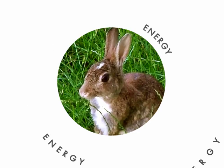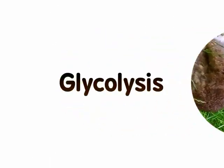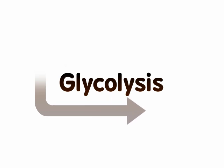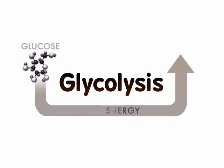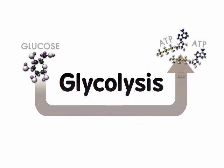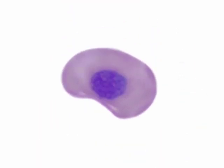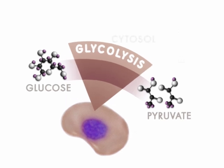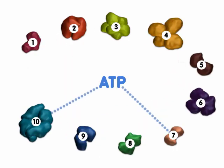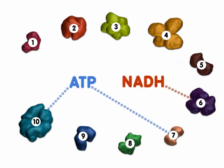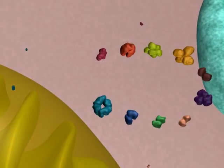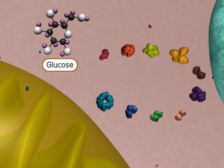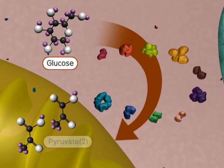Biological organisms require energy to survive. Glycolysis is one of the pathways cells use to transform sugars, like glucose, into biochemical energy in the form of ATP. In the cytosol of the cell, glycolysis converts glucose into pyruvate through a series of 10 enzymatic reactions. This process produces ATP, along with other products such as NADH, that can be used later to produce even more ATP for the cell. Let's watch as these enzymes oxidize one glucose molecule into two pyruvate molecules.